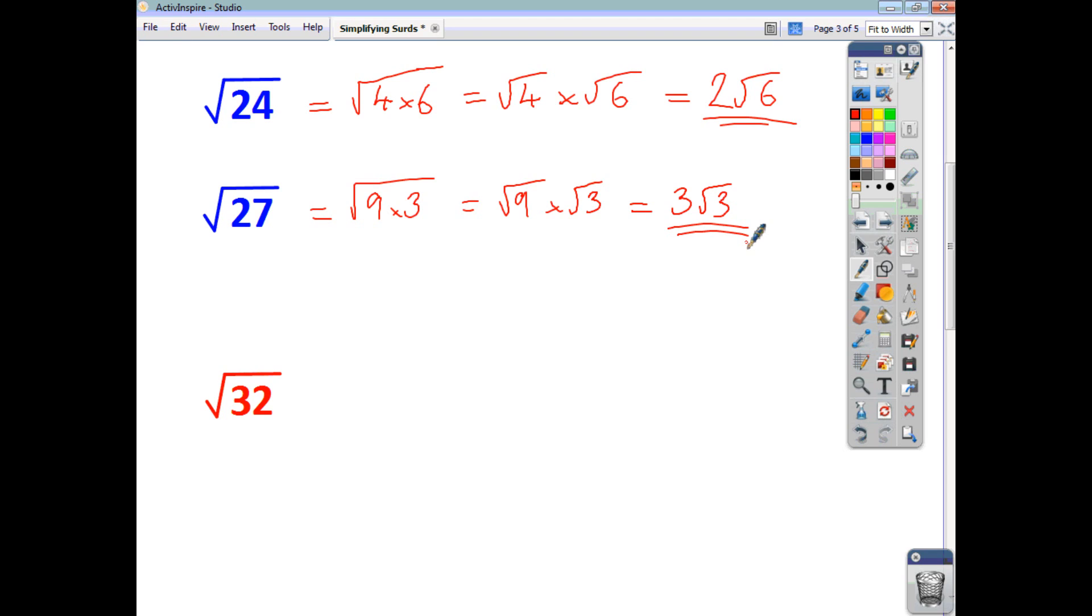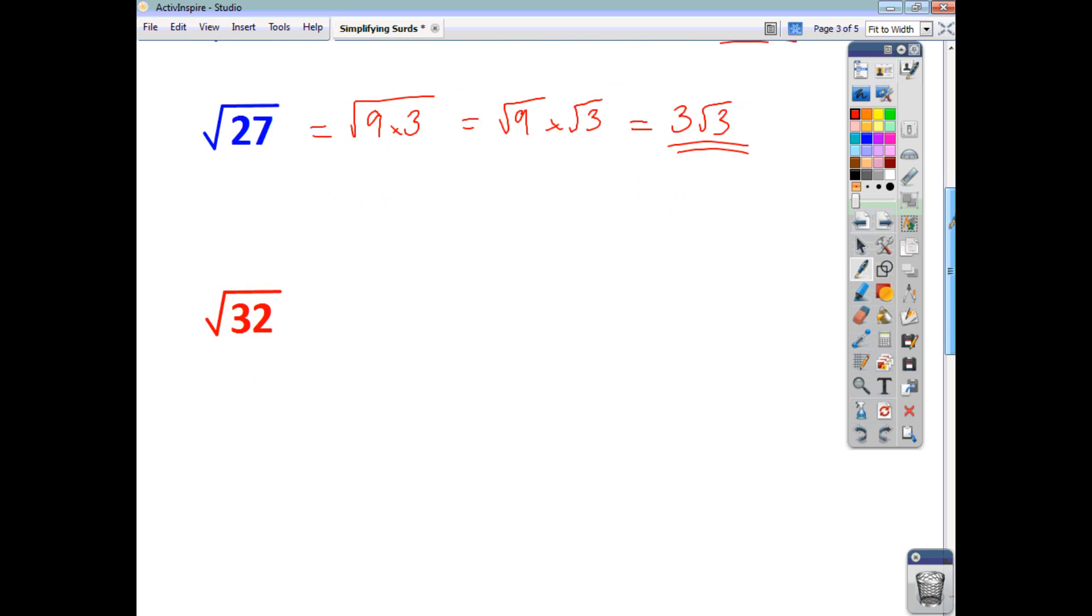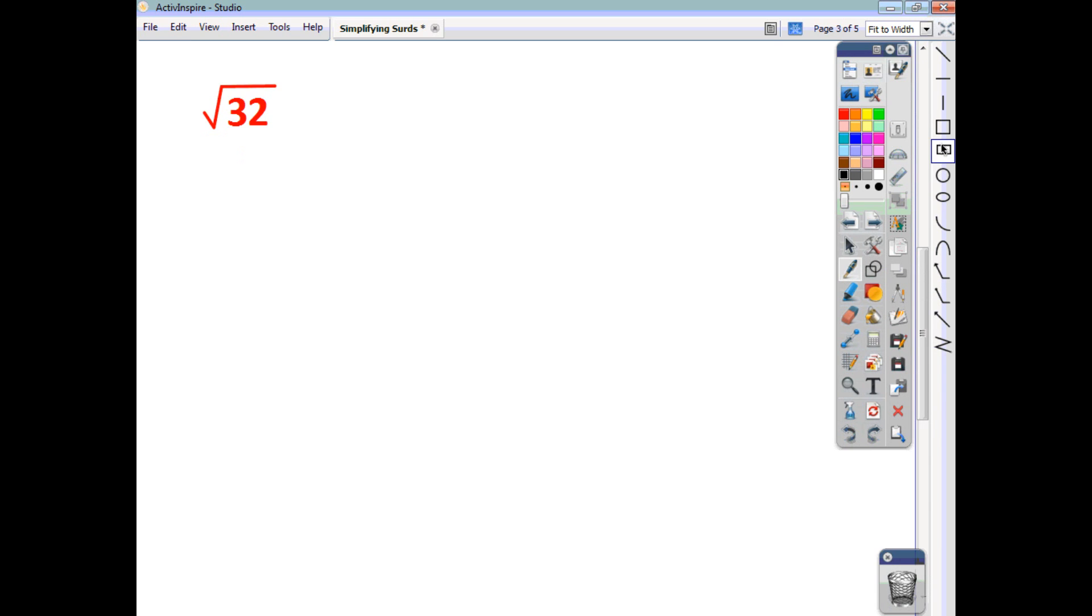Now, there are different ways you can go about answering your question. And sometimes you may well find that there's more than one square factor within a number. And an example of this is the number 32. If you're asked to simplify root 32, you can do it one of two ways. One of the ways is a bit quicker than the other. So let's have a look, first of all,